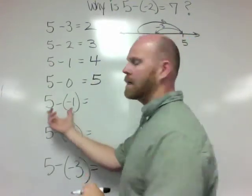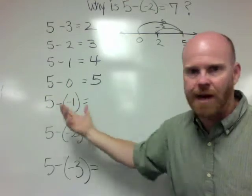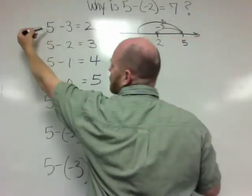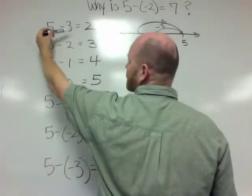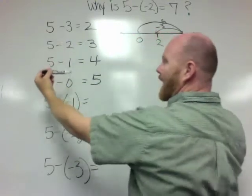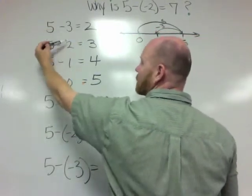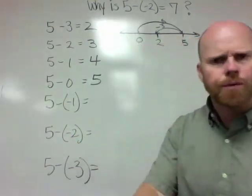Now we're getting into some iffy stuff. What is this answer? 5 minus negative 1. Well, let's see if we can find a pattern up here. We can see that our numbers are always 5s at the beginning. And then we could see that the second number, the number we are subtracting, goes down by 1 every single time. 3, 2, 1, 0, negative 1, negative 2, negative 3. So we're finding a pattern.